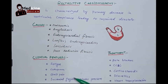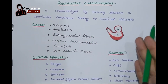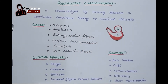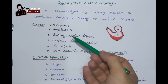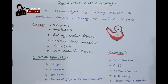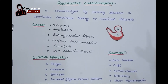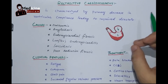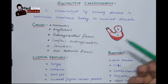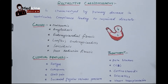Looking at the causes, restrictive cardiomyopathy can be primary or secondary. Primary is usually idiopathic — we don't know the reason. Secondary causes include amyloidosis, specifically systemic amyloidosis, where abnormal extracellular protein gets deposited on the myocardium, leading to impaired diastolic dysfunction and thus restrictive cardiomyopathy.